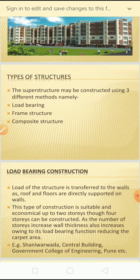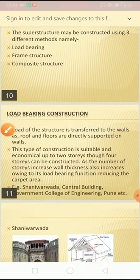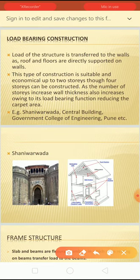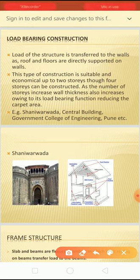There are three types of structures discussed yesterday: load bearing structure, frame structure, and composite structure. In a load bearing structure, the load of a structure is transferred to the walls — roofs and floors are directly supported on the walls. The wall is a structural member that carries the load. The roof and floor directly rest on the wall, so the wall takes the load.